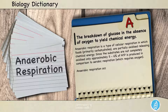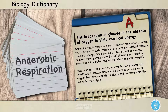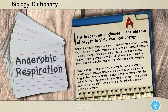Anaerobic respiration occurs in some bacteria, plants, and yeasts, and in muscle tissue when there is an absence of oxygen. In plants and microorganisms, the pyruvate from glycolysis is converted to ethanol and carbon dioxide. In animals, however, pyruvate is converted to lactic acid.